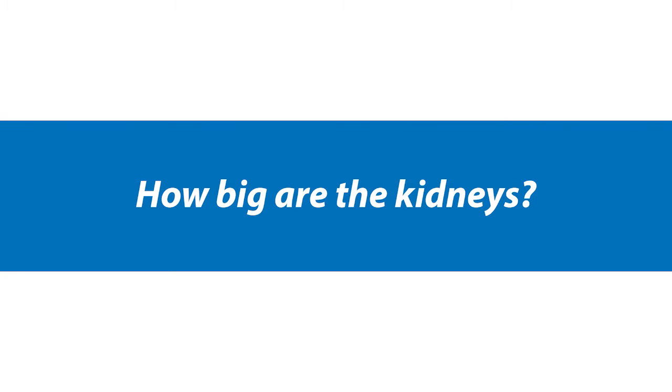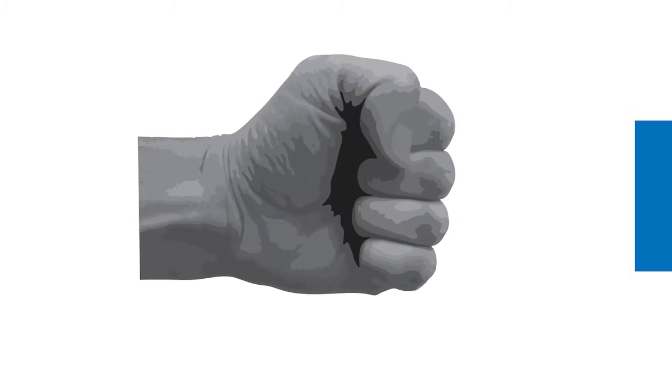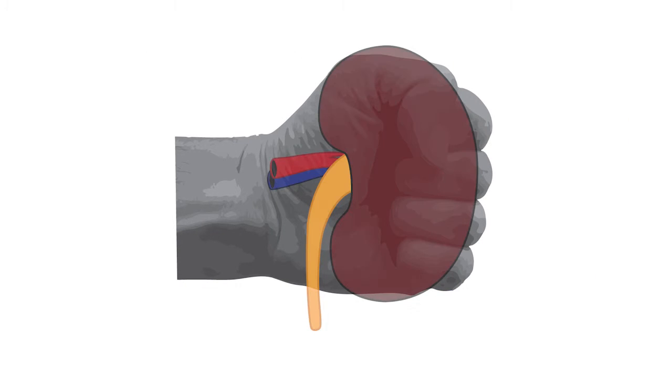In this lesson we're going to review the gross anatomy of the kidneys. Let's start by answering the question: how big are the kidneys? Your kidney is roughly the size of your clenched fist, which suggests that kidney size is related to the size of a person.